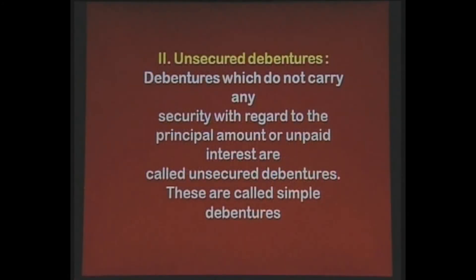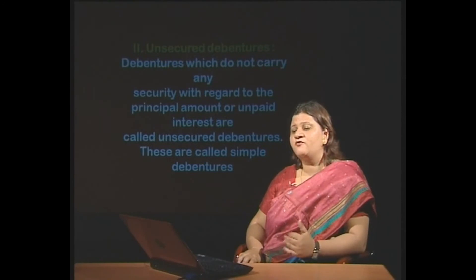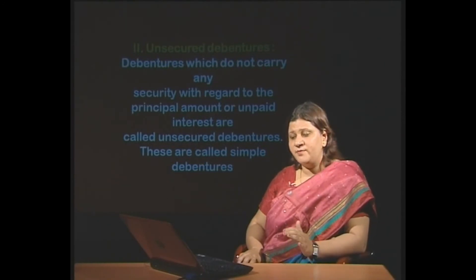The second category is unsecured debentures. Debentures which do not carry any security with respect to the principal amount or unpaid interest are called unsecured debentures. They are simple debentures. Their principal amount as well as the unpaid interest amount is totally unsecured. There is no asset mortgage taking place for repaying the amount due to such debenture holders.